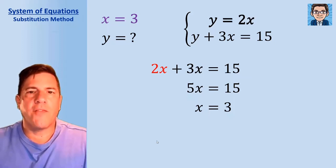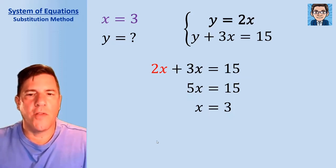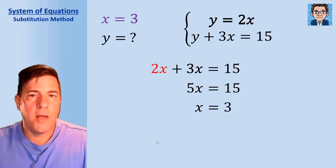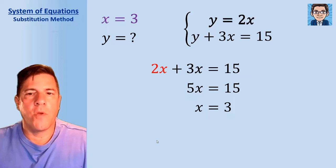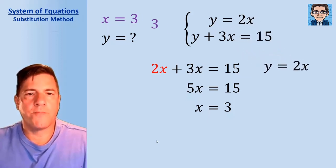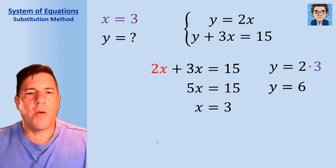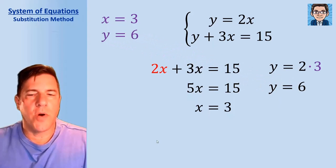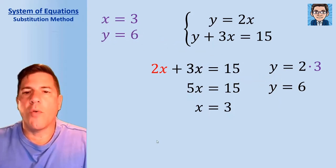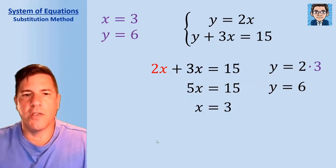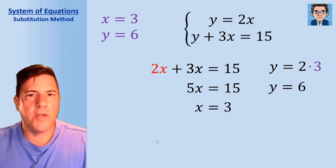Now in solving a system, we've got to find both x and y. So we take x equals 3 and plug it into one of the equations. We'll use y equals 2x since it's already solved for y — it's going to be much easier. Put 3 in for x: 2 times 3 is 6, so y equals 6. Our two answers are x equals 3 and y equals 6, which make both equations true.